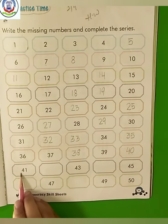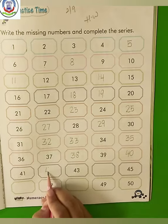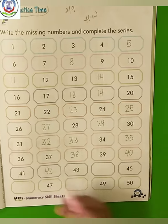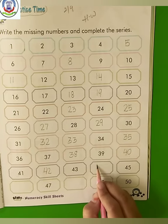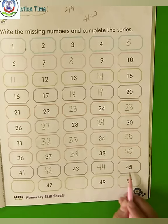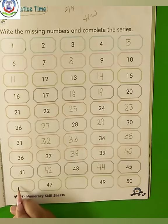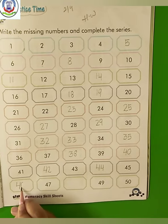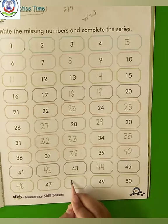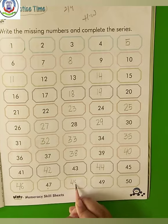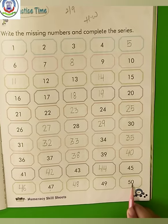40 plus 1, 41. After 41? 40 plus 2, 42. 40 plus 3, 43. Then what will come? 40 plus 4, 44. 40 plus 5, 45. After 45? 40 plus 6, 46. 40 plus 7, 47. After 47? 40 plus 8, 48. 40 plus 9, 49. 40 plus 10, 50.